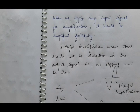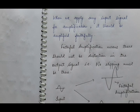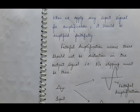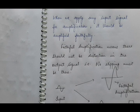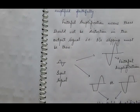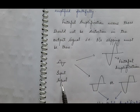Now, the next thing you need to understand is why I am stressing upon the suitable operating point — why a suitable operating point must be chosen. It is because when we provide any input signal for amplification at the input terminals of the NPN common emitter transistor, the output we expect is — since it is a common emitter amplifier — the output will be out of phase with the input signal. And we expect this output to come without any distortion and with amplification.